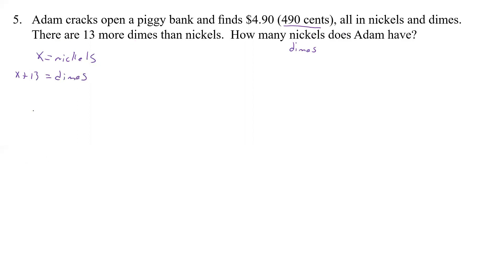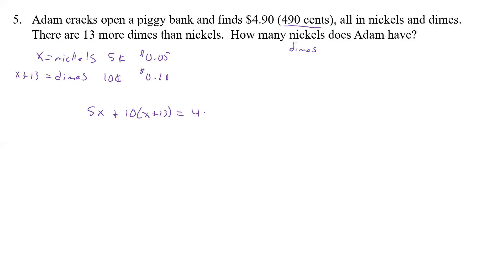Now, how much are they worth? Nickels are 5 cents and dimes are 10 cents. Remember, if we were working with $4.90 we'd use 0.05 and 0.10, but since we're using 490 cents, we use the whole cent values. So we take 5 cents times the number of nickels, plus 10 cents times the number of dimes, and that should equal 490.